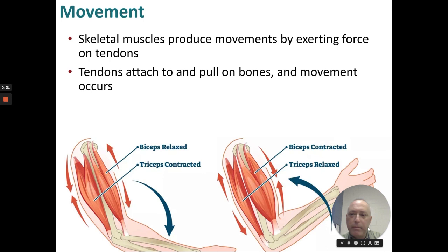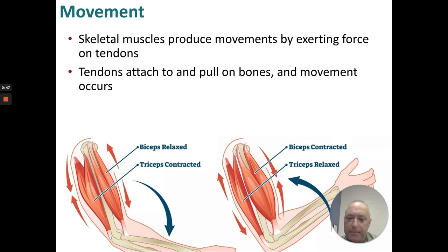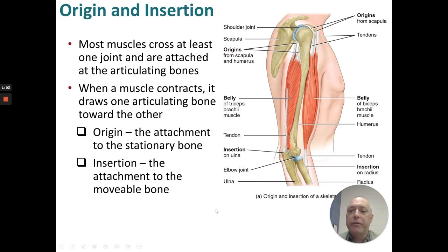Skeletal muscles produce movement by exerting force on the tendons, and tendons attach to and pull on the bones, and movement occurs. I have shown here the biceps. When the triceps contracts, the forearm moves away, and when the bicep contracts, you get movement towards the body. Most muscles cross at least one joint and are attached at the articulating bones. When a muscle contracts, it draws one bone towards the other.